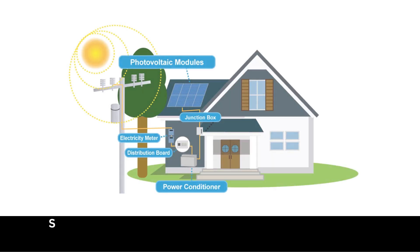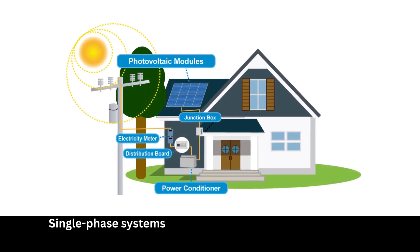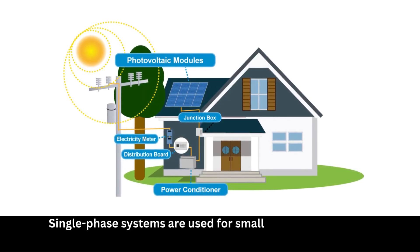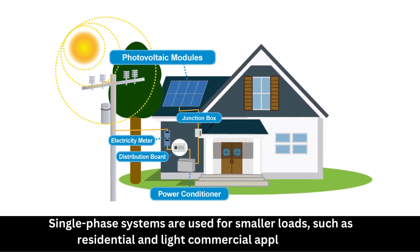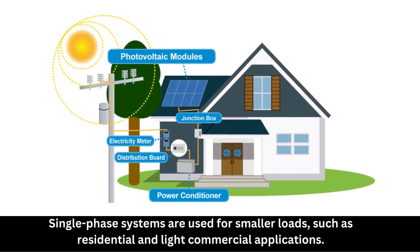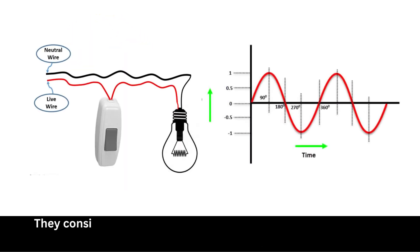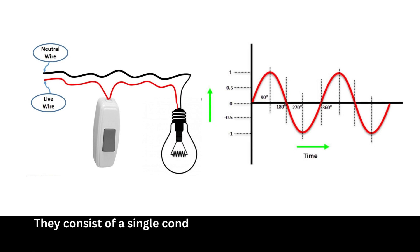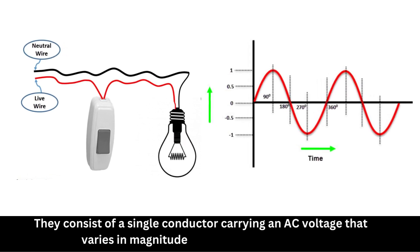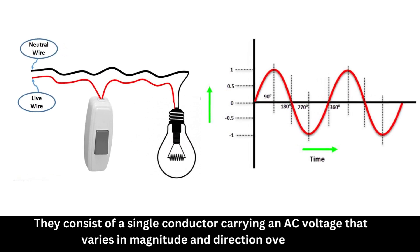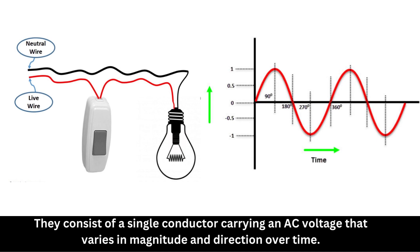Number 4: Single-phase systems. Single-phase systems are used for smaller loads, including residential and light commercial applications. They consist of a single conductor carrying an AC voltage that varies in magnitude and direction over time.